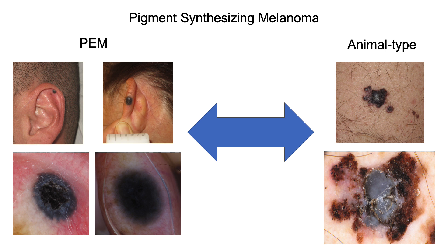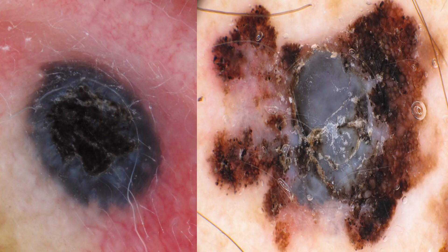Both PEM and animal type melanoma usually appear as heavily pigmented papules, mainly located on the head and neck and limbs. Comparing PEM to animal type melanomas, we found that the former was generally indistinguishable from a blue nevus, displaying a homogeneous blue-black pattern on dermoscopy, while the latter was frequently characterized by peripherally located additional criteria, such as atypical network, ulceration, irregular pseudopods or streaks, and dots.